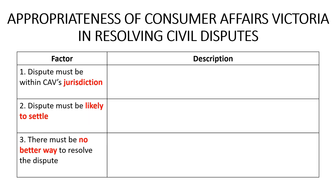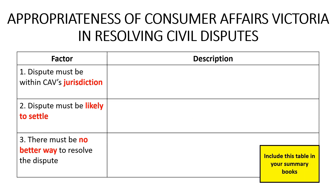On this slide I've set out a table that you need to include in your summary books. This table sets out each of the three factors in the left-hand column. You will then need to describe the relevance of each factor in more detail in the right-hand column. Please make sure that you fill out this table as we work our way through these slides.